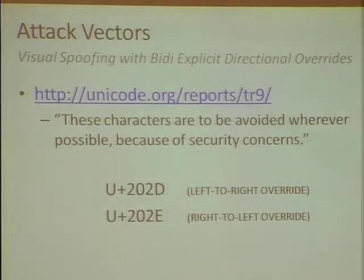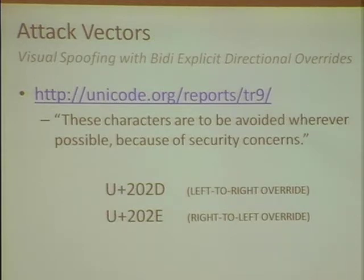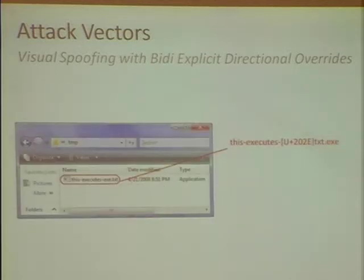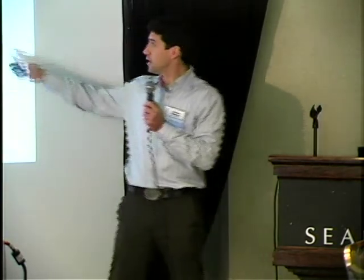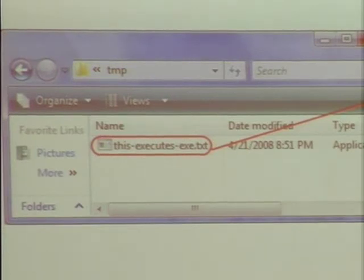The Unicode Consortium is wise to all this stuff — they've documented that bidi override characters like left-to-right override and right-to-left override are to be avoided whenever possible because of security concerns. Shove one of these into a string and from that point on the string is reversed. Here's a fun attack: an executable file that ends in .exe but looks like it ends in .txt. By injecting a right-to-left override character, it's actually a .txt.exe that visually appears as .exe.txt — flipped around completely.